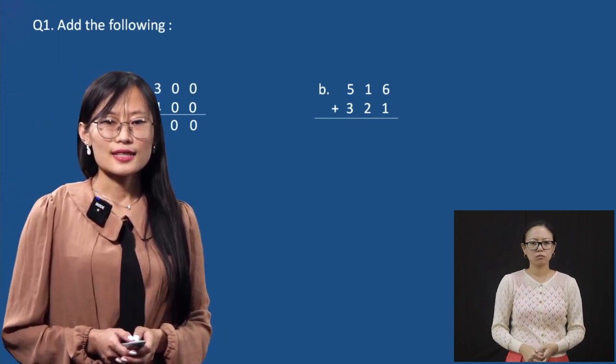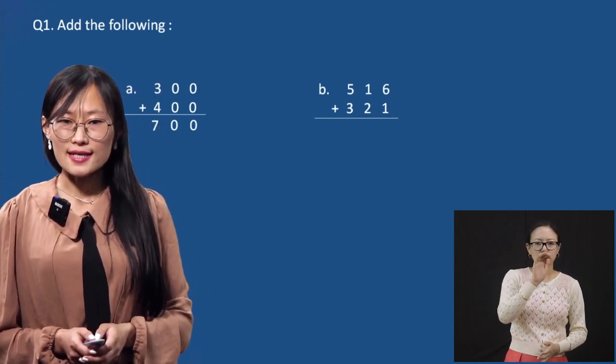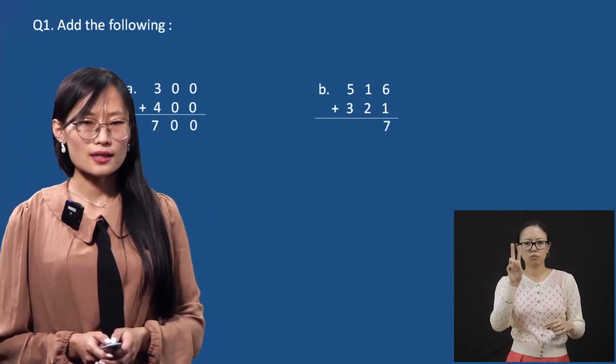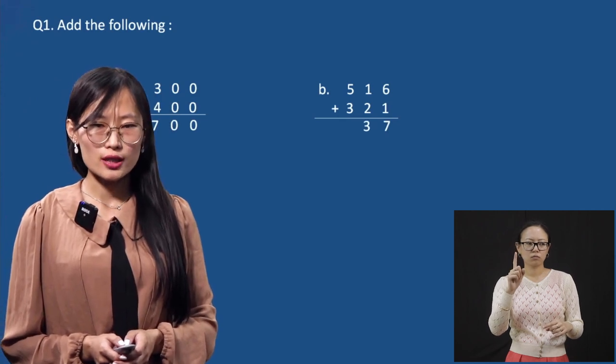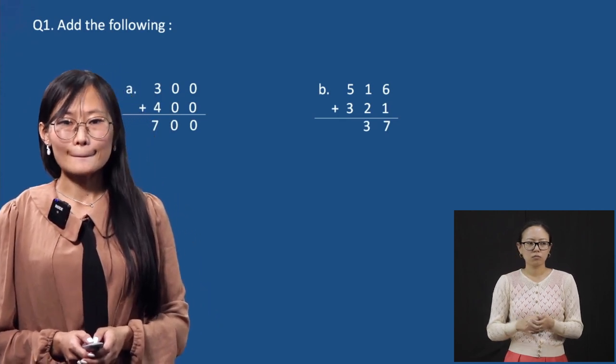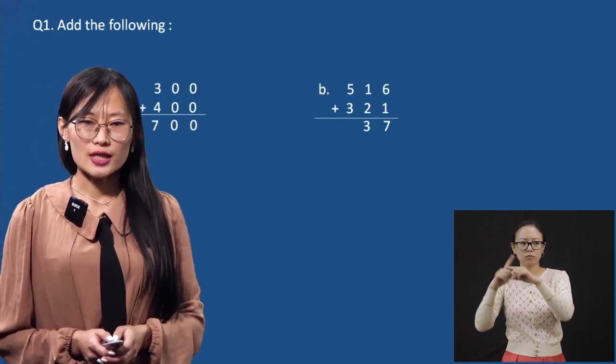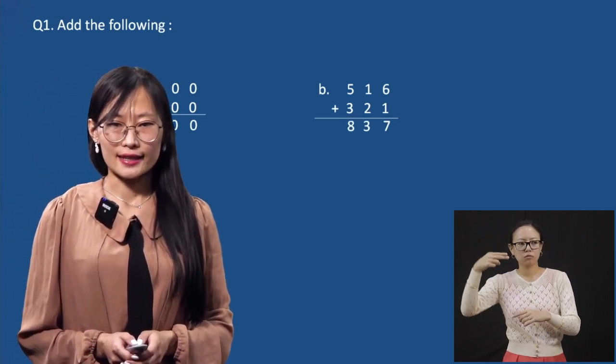For question B: six plus one is seven. Then one plus two is three. Five plus three is eight.